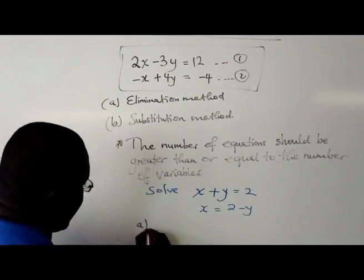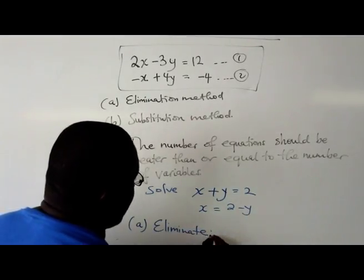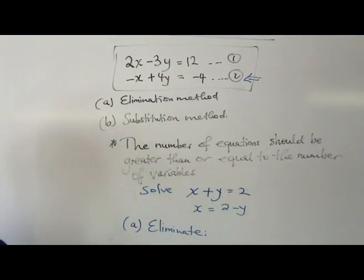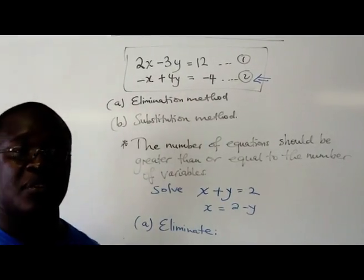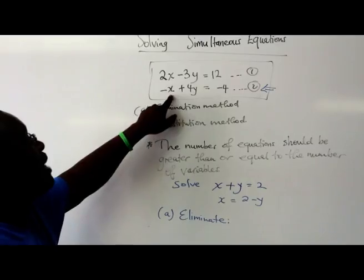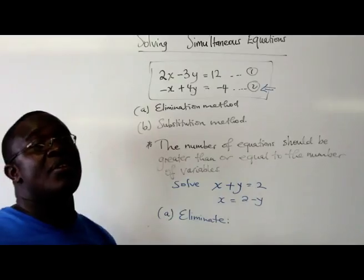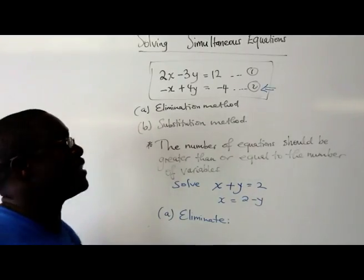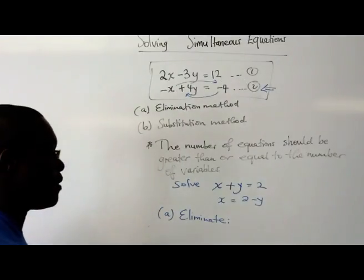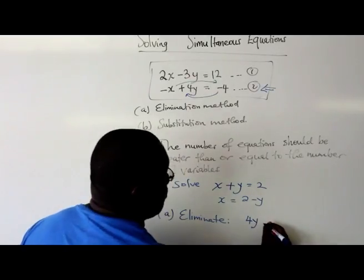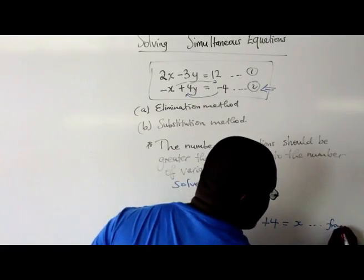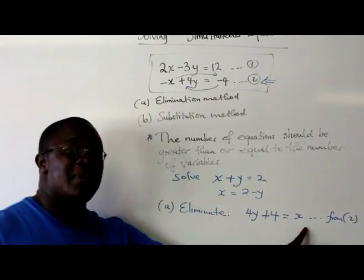Now using the elimination method, we want to eliminate one of the variables here. So for me, I'm going to eliminate x in equation 2. There is no rule to say you should eliminate in the first one or the second one. It's up to you to say which one is easier. For me, the reason why I'm going to eliminate x in 2 is because I can just get rid of the negative and I have an x which has no other special coefficient. So what I'm going to do is I'm going to bring in negative 4 to this side and take x to that side. So it's going to be 4y plus 4 equal to x. So that means that's the value of x in equation 1. This is from equation 2.